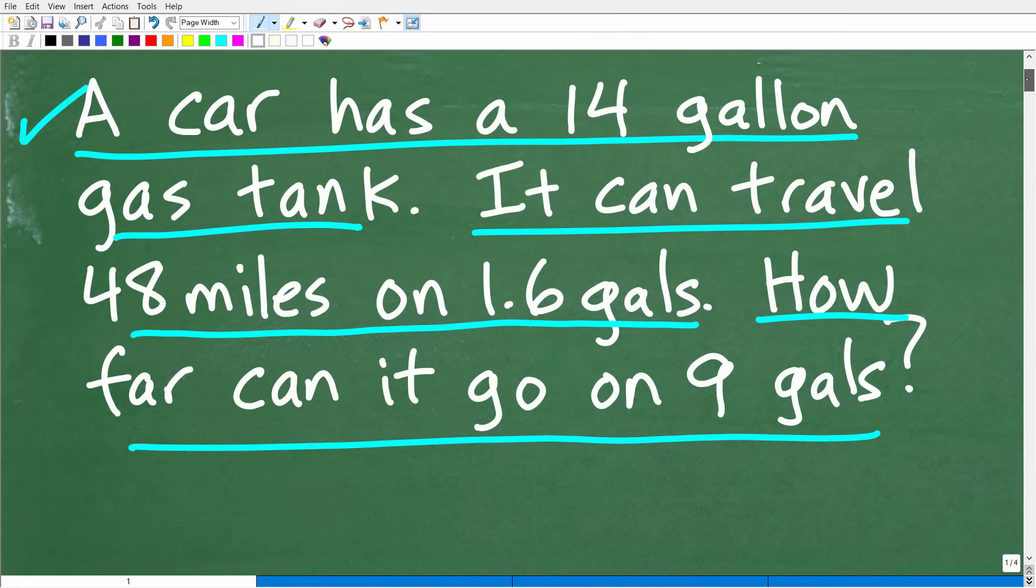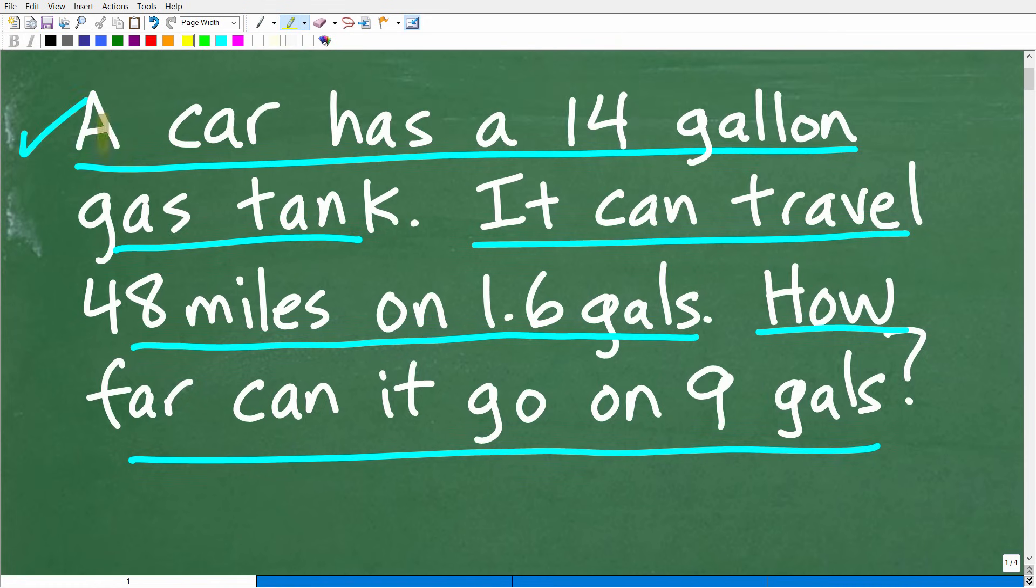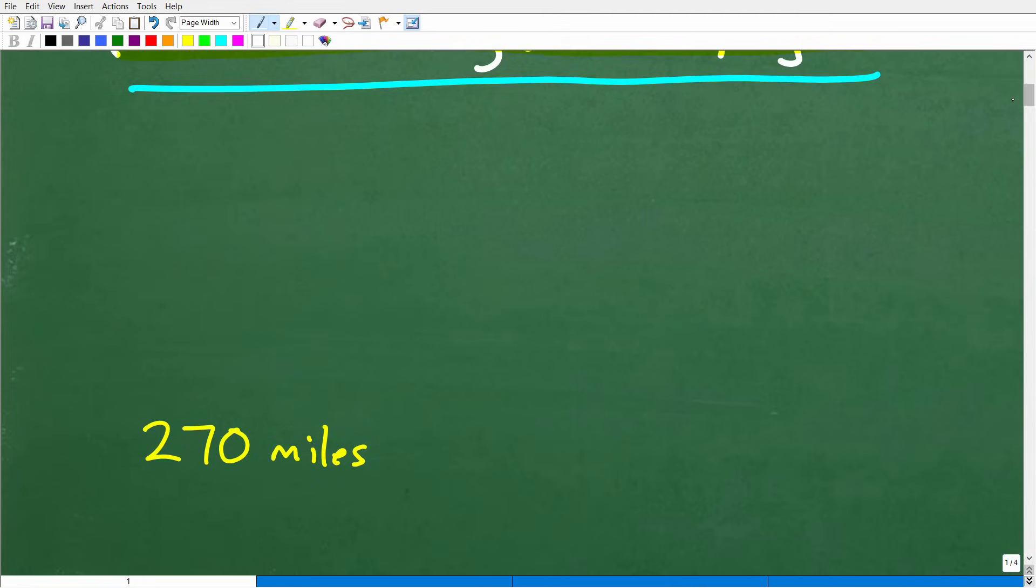Okay, so one more time, we have this car. A car has a 14 gallon gas tank. It can travel 48 miles on 1.6 gallons. How far can it go on nine gallons? All right, so let's take a look at the answer. The correct answer is 270 miles.